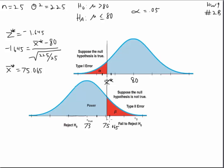So now to calculate the power, we could just standardize this right here and find out what's the probability of getting a sample mean less than 75.065 if we know that the true mean is 73.